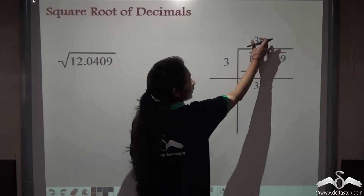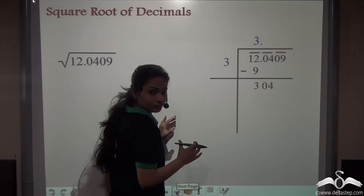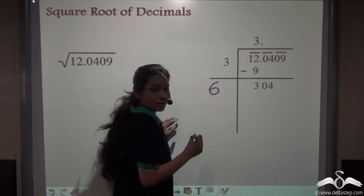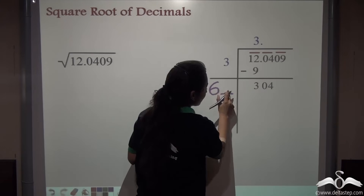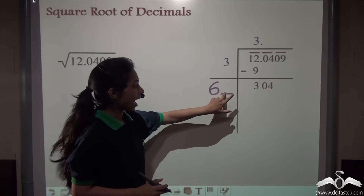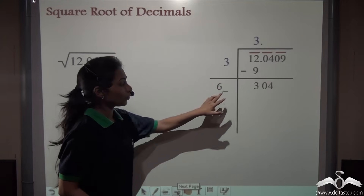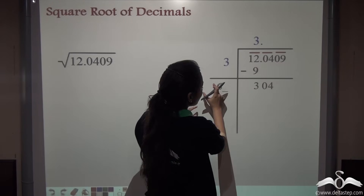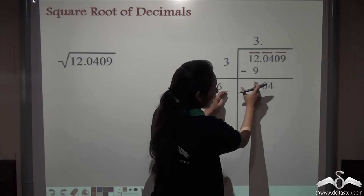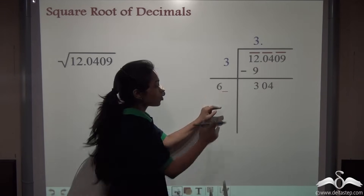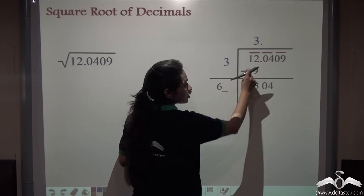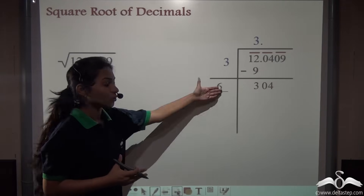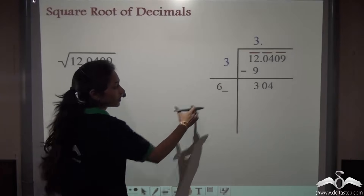Next, what do we do? We double this quotient and write it as a new divisor. So three doubled gives us six. We put a blank towards its right. We have to find another number here. The number we put in the blank has to be the same number which when multiplied with this whole divisor gets a value less than or equal to the new dividend. So the digit we put in the blank shall also be written as the next quotient. Just recall long division method — we do the same thing here.